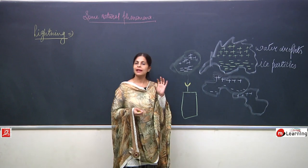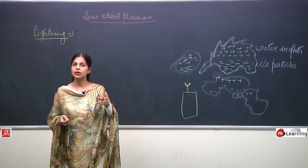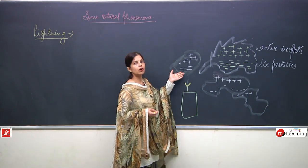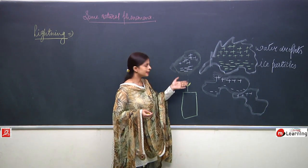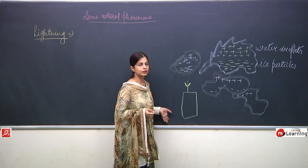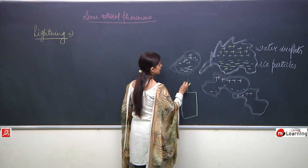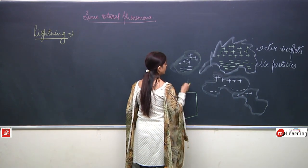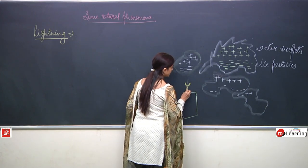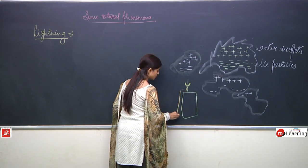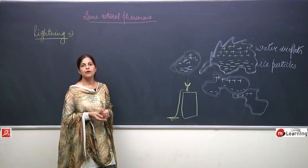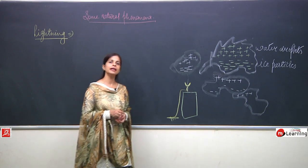A lightning conductor is a device through which the current or charges can be directly passed to the surface of the earth — inside the surface of the earth. It has a forked part, a copper strip, and from there a wire comes out which is buried deep into the surface of the earth.